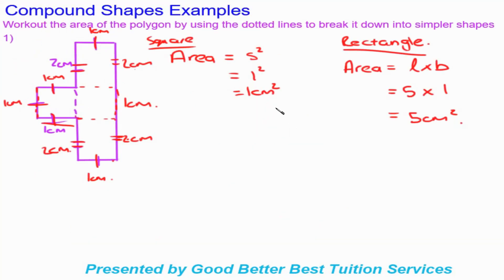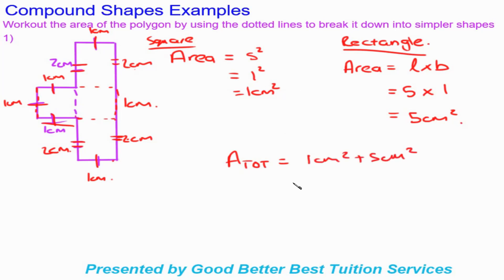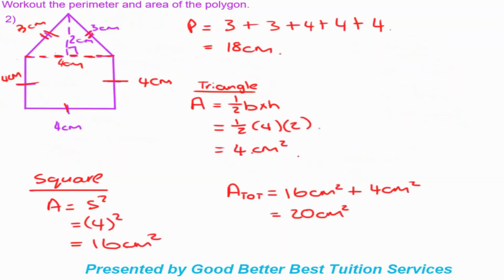Coming back to correct example one: I forgot to add the two areas together. Total area equals one centimeter squared plus five centimeters squared, which gives a final answer of six centimeters squared. You always need to add the areas together to get the total area of the polygon.